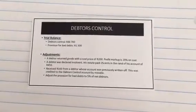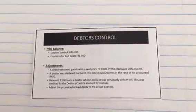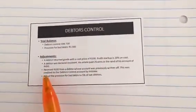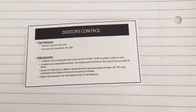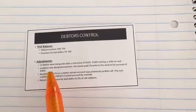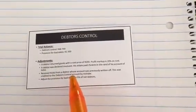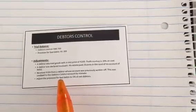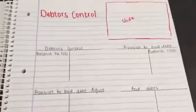Hello everyone. Today we are going to look at all the adjustments that link to debtors control, but more specifically we are going to look at provision for bad debts and how to adjust that, which is our last adjustment. We will start with a couple of adjustments linked to debtors: a debtor returns goods, a debtor was declared insolvent, money received from a debtor entered in the wrong place, and then the adjustment for provision for bad debts.